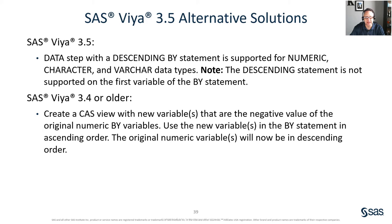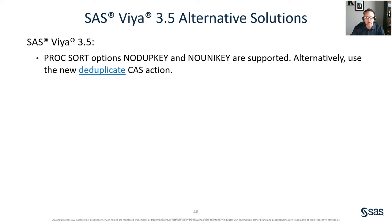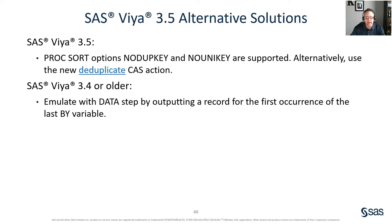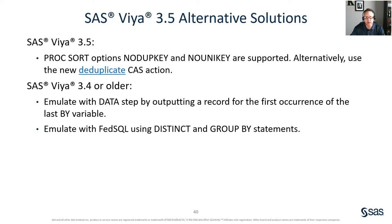Continuing on, PROC SORT options NODUPKEY and NOUNIKEY are supported in SAS Viya 3.5. Alternatively, you can use the brand new CAS action deduplicate. In SAS Viya 3.4 or older, you can emulate these with the data step by outputting a record for the first occurrence of the last by variable. You can also emulate this with FedSQL using DISTINCT and GROUP BY statements. Lastly, you can use the CAS action group by info to remove duplicates.